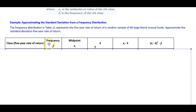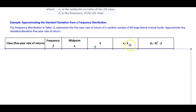We are creating five columns. The first column has the class, which is the five-year rate of return. We have our frequency, we have our midpoint, and then what is the sample mean. Then we take the midpoint minus the sample mean, and in the last column we take the midpoint minus the sample mean, squared, and multiply it by the frequency.